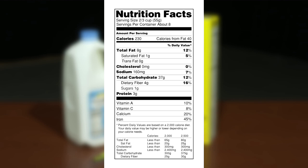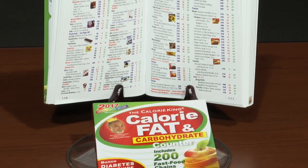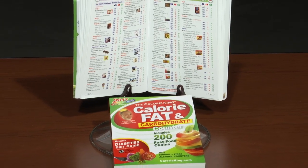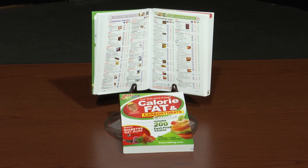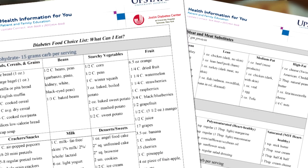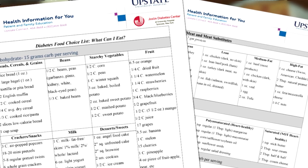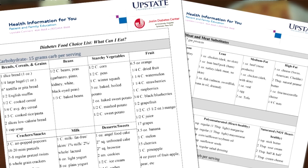The first place to look is on the food label that is found on many foods purchased at the store. When using a food label, look at the serving size and total carbohydrate portion of the label. If you don't have a food label, you can use the Calorie King book. This book contains the carbohydrate content of a variety of foods and restaurant items. There is also a Calorie King website and app that you can use to search for the carbohydrate content of foods. The Jocelyn Food Choice List is also a great resource for carbohydrate counting, and can be found at our resource page.